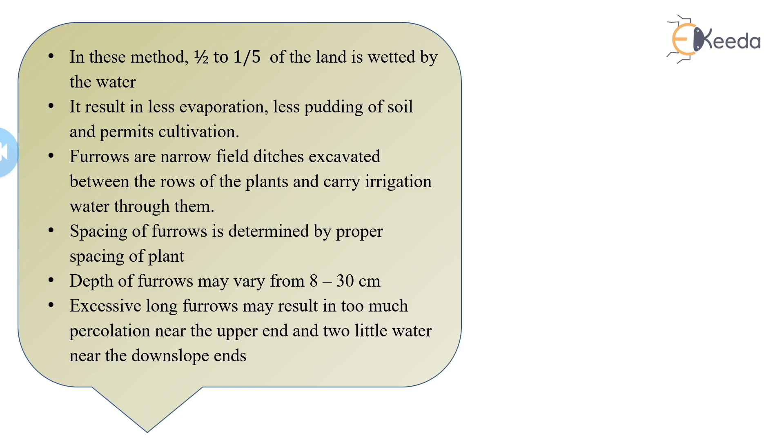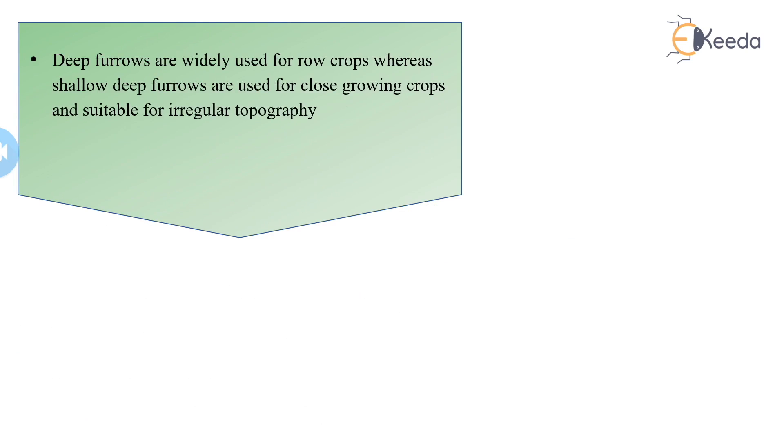Generally we are considering the depth of furrows is 8 to 30 cm. This is the furrow irrigation - it reduces the percolation, it reduces the evaporation losses, it reduces the soil erosion problems. This is one of the best methods or best techniques of irrigation.